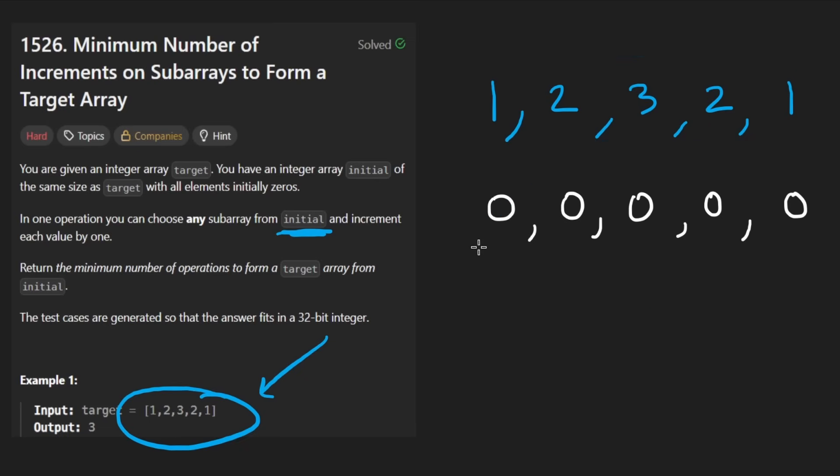For the first subarray, we can try to be greedy, we can try to get the entire array and increment everything because we know everything needs to be incremented at least once. So increment everything that's one operation. Now everything is going to be a one. That's good. But there's still some elements that need to be increased. But luckily, they are contiguous.